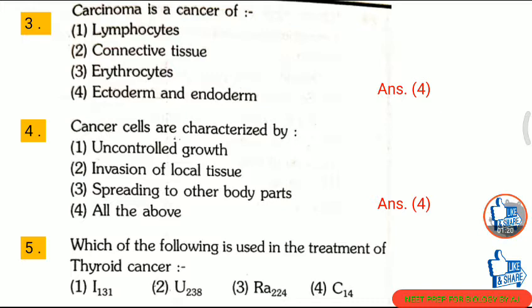Question 5: Which of the following is used in the treatment of thyroid cancer? First, I-131; second, U-238; third, Ra-224; fourth, Carbon-14. The correct answer is option 1: iodine-131.